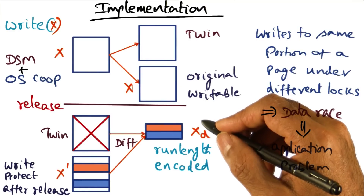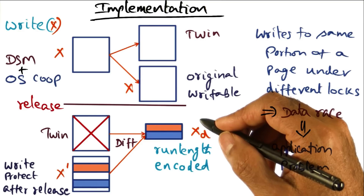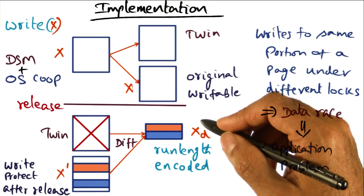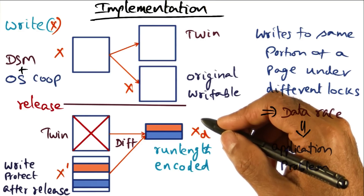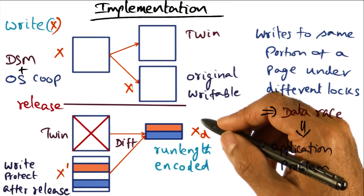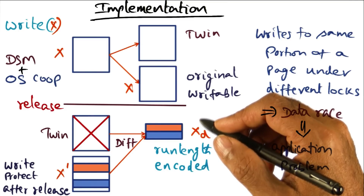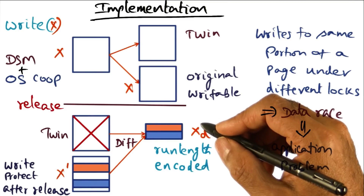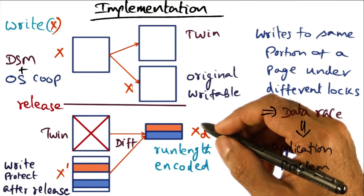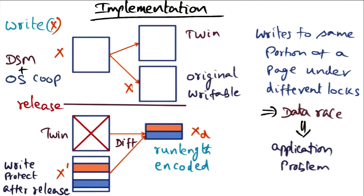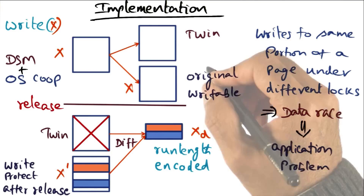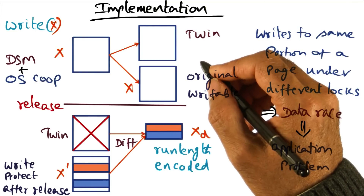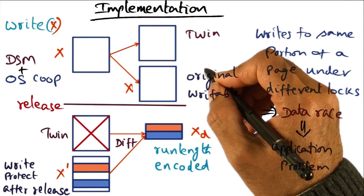Treadmarks implemented this LRC multiple writer coherence protocol on a Unix system. In the Unix system, the operating system generates an exception called SigSegV when a shared page is accessed by a thread. This exception is caught by the Treadmarks runtime handler.